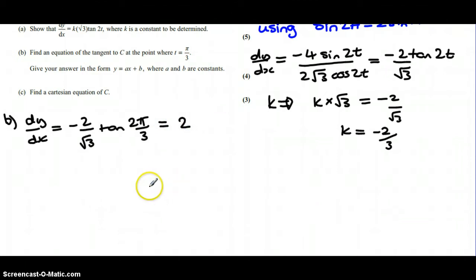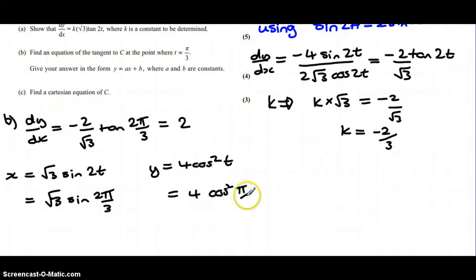If we work out tan 2 pi over 3, you'll see that you get a gradient of 2 because tan 2 pi over 3 is minus root 3. We're now going to have to find an x coordinate using our first expression and a y coordinate using our second expression from the question, so we're going to substitute t into these, so 2 pi over 3 and for this one the same thing of pi over 3.